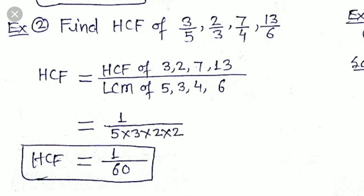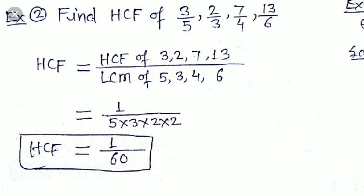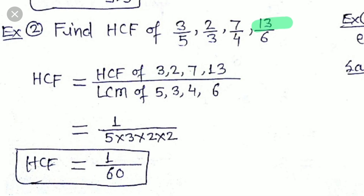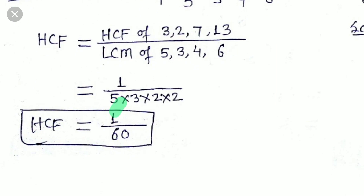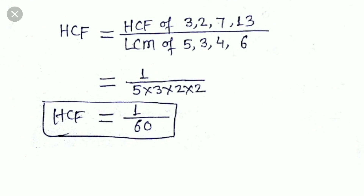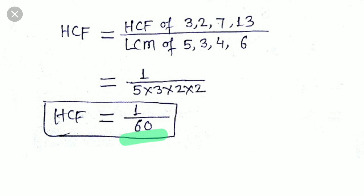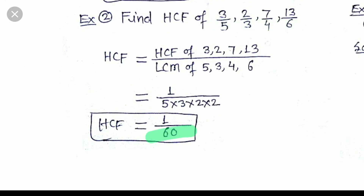Now see the second example: HCF of 3/5, 2/3, 7/4, and 13/6. The process is the same. Take the HCF of the numerators 3, 2, 7, and 13. The only number which can divide all four completely is 1. The LCM of the denominators 5, 3, 4, and 6: 5 once, 2 appears twice (from 4), and 3 once (from 3 and 6, already included). So LCM = 5 × 4 × 3 = 60. Therefore, the HCF of these four fractions is 1/60.